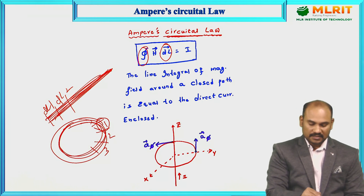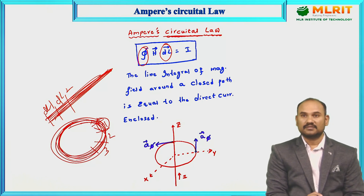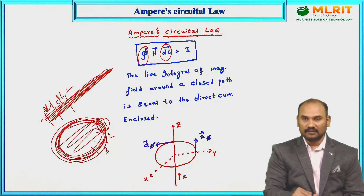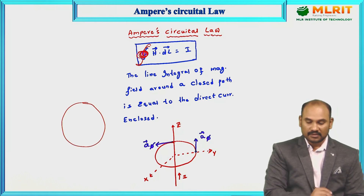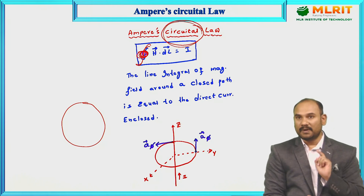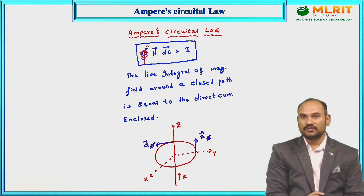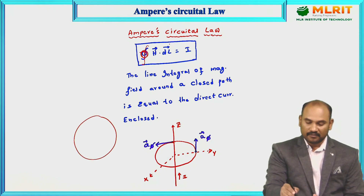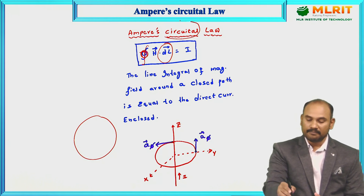For a closed path we use the term circumference; for an open path we say length. The integral symbol here has a closed contour symbol because in Ampere's Circuital Law we are integrating the magnetic field around a closed path. Because it is a line integral, we have dL. 'Circuital' means closed path — the magnetic field circulates around the conductor carrying current, which is why we call it circuital.